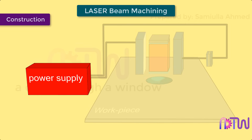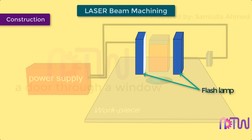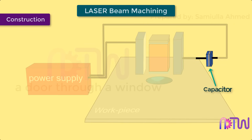Power supply: it requires a power supply of 1 to 10 kilowatts. A high-voltage power source is used to produce light in flash tubes. Flash lamp: the flash lamp or flash tube is used to charge the electrons of the atoms in the crystal, also called the pumping medium. Capacitor: the capacitor is used for operating the laser beam machine in pulses.